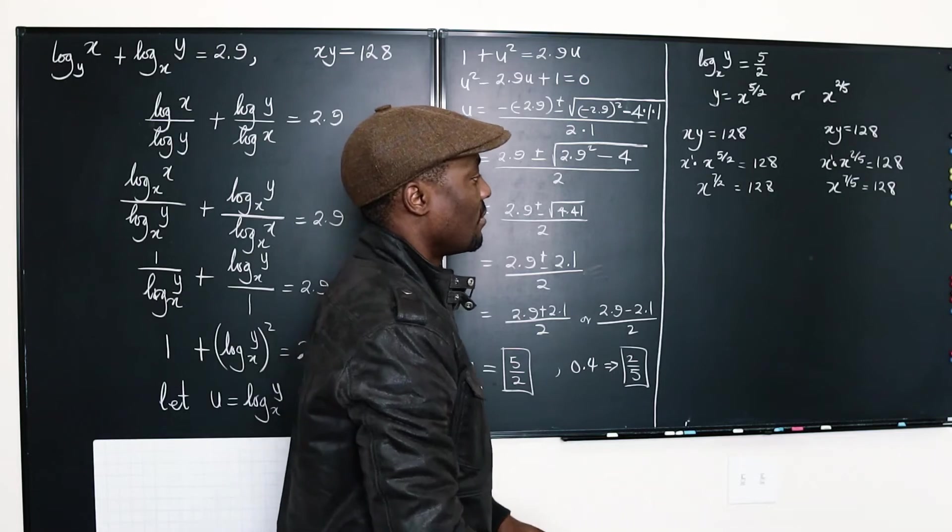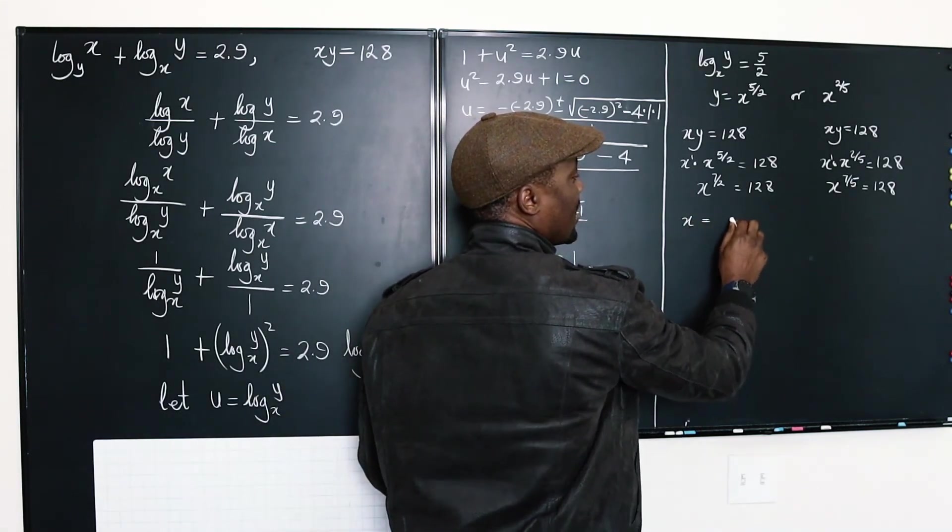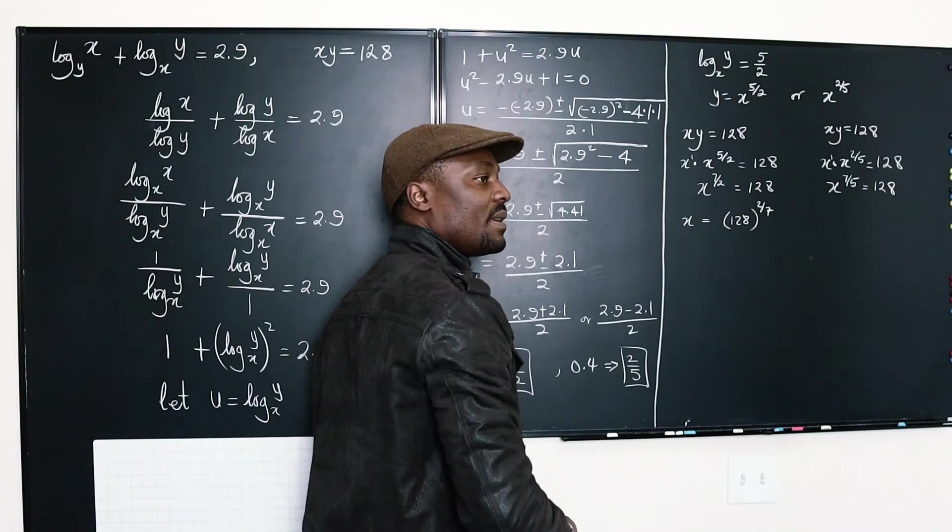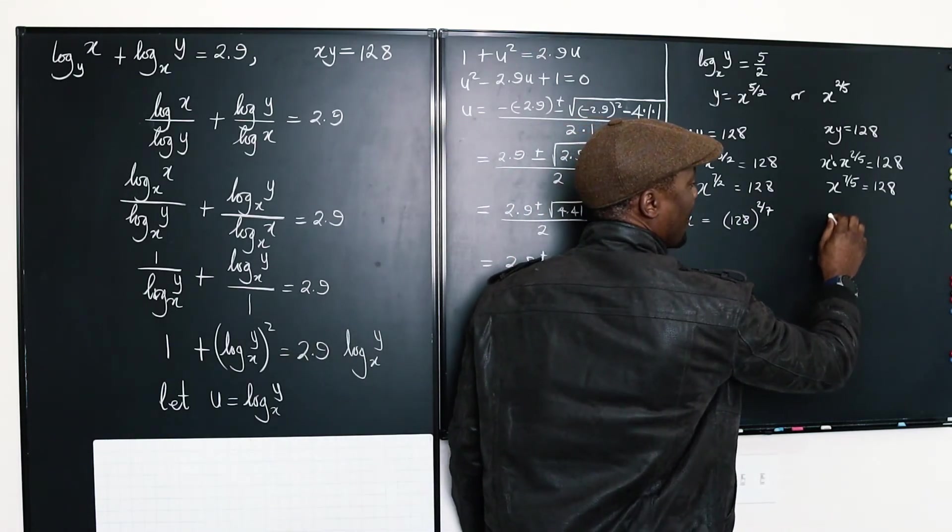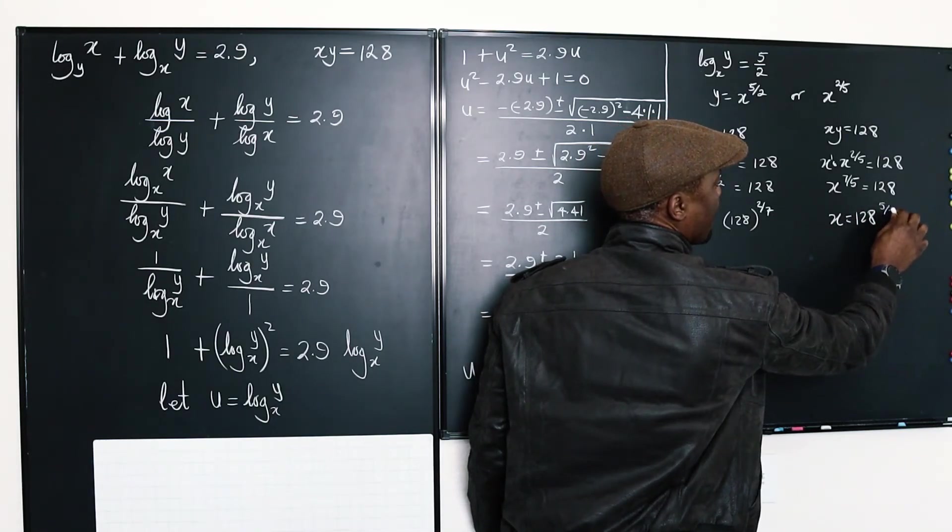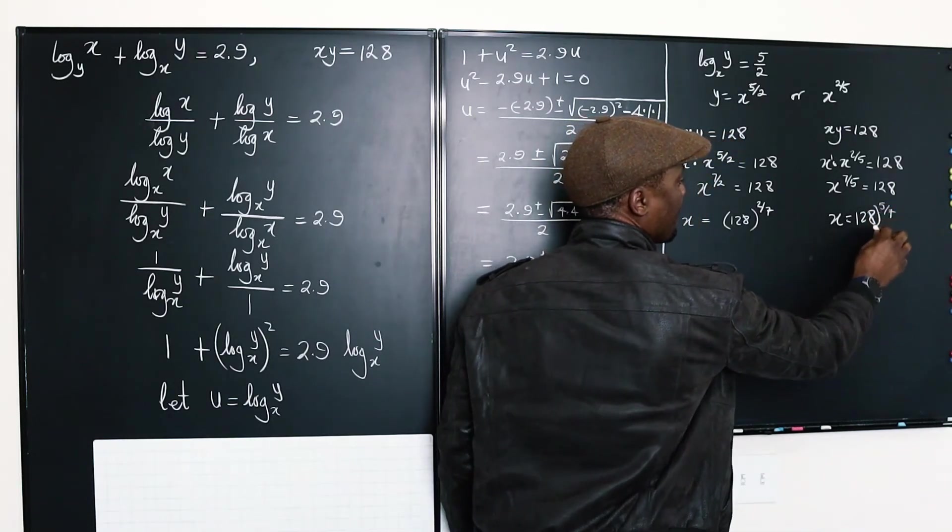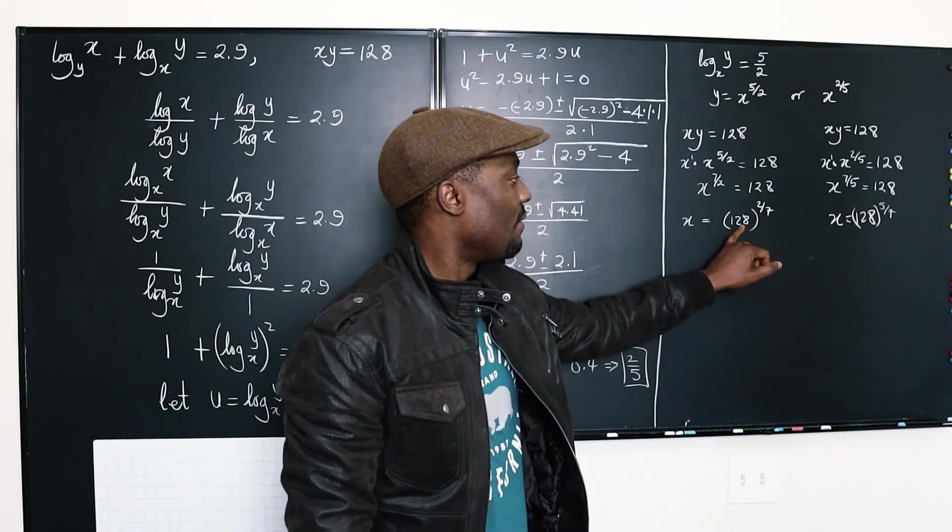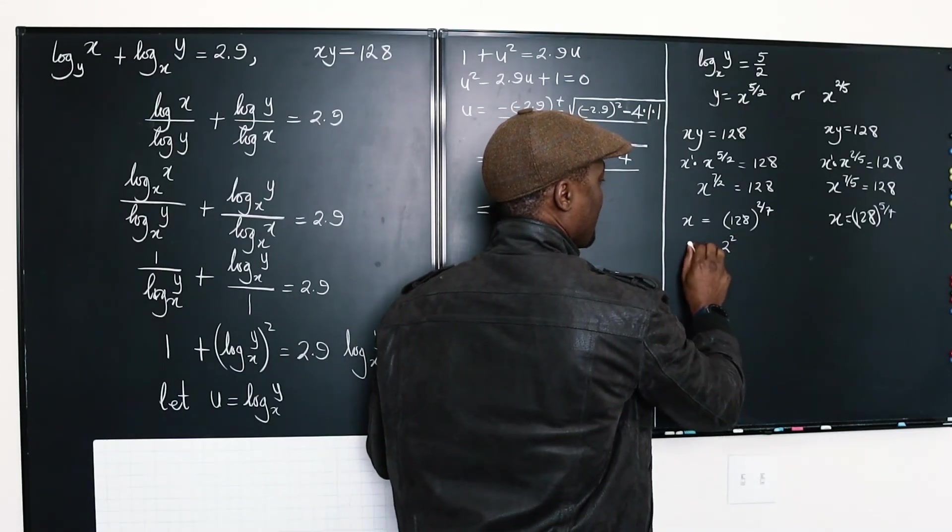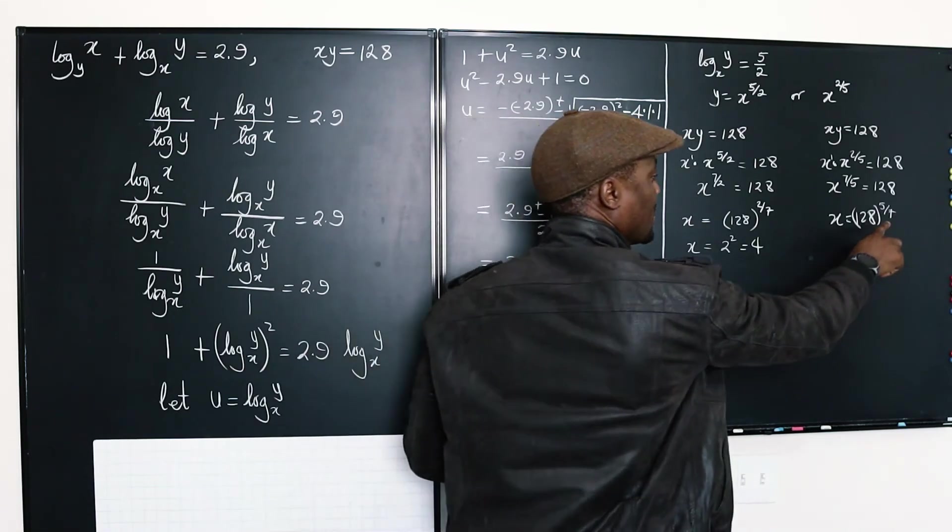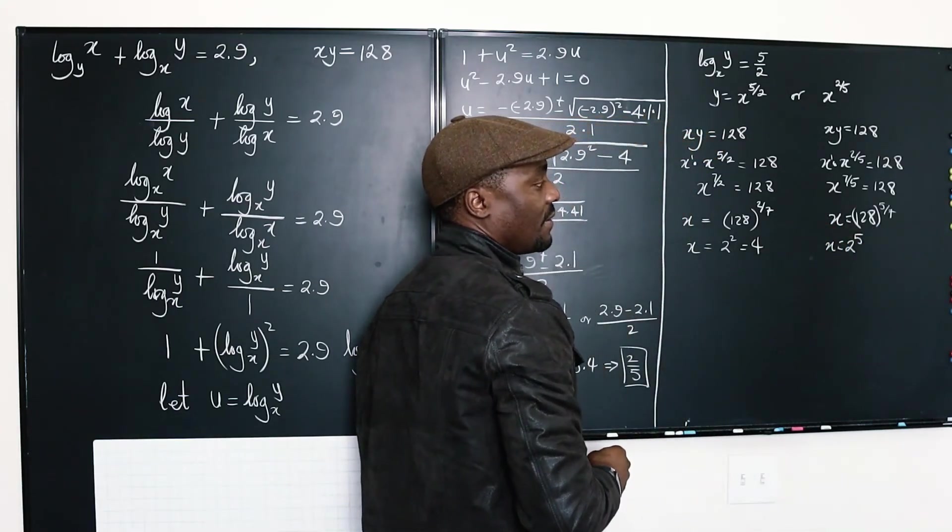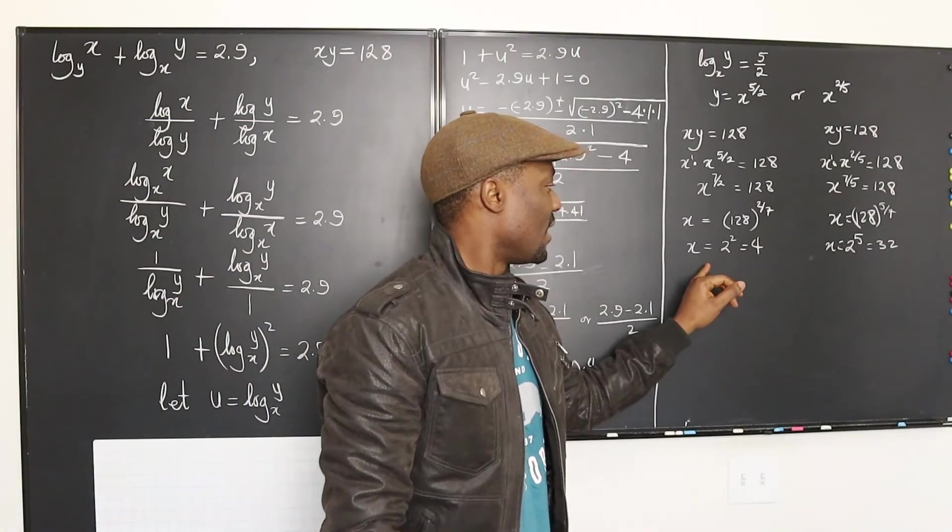So, how do we get x? Well, x is going to be 128 to the 2 sevenths. You flip the exponent. The same thing here. x is going to be 128 to the 5 sevenths. So, what is the 7th root of 128? It's 2. That's going to be 2 squared, which is going to be 4. What is the 7th root? It's 2. x is going to be 2 to the fifth. And 2 to the fifth is 32. x is going to be 32. So, x could either be 4 or x could be 32.